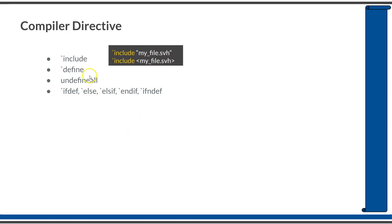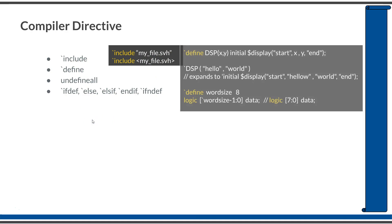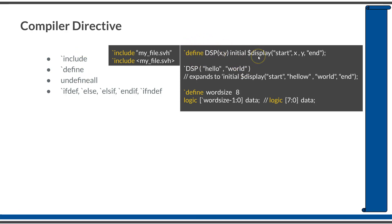The next one is `define. If you are familiar with `define functionality in C, this is similar to that. You can define any set of functionality using `define, and the compiler will just replace the definition with its original definition whenever it is encountered.